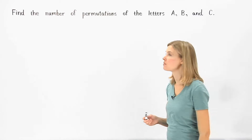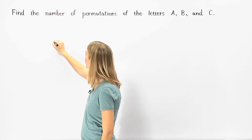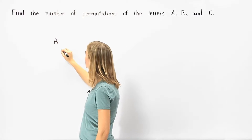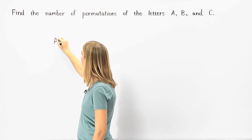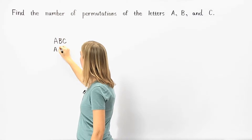For example, if we start with the letter A, we can arrange the letters as A, B, C or A, C, B.